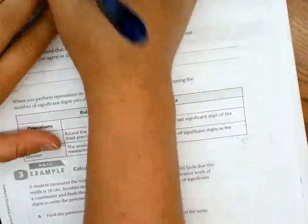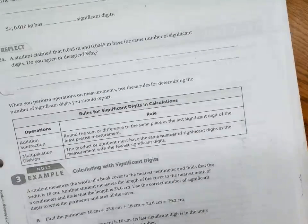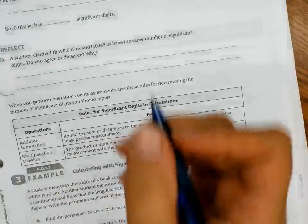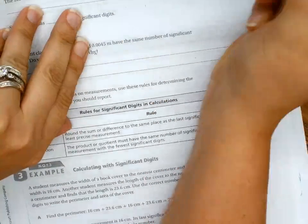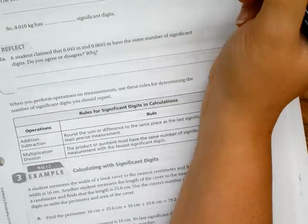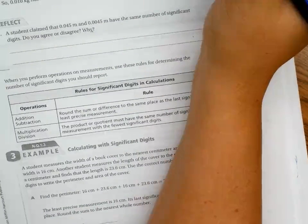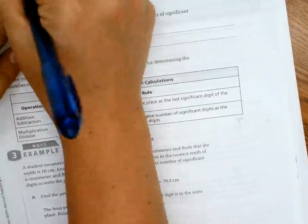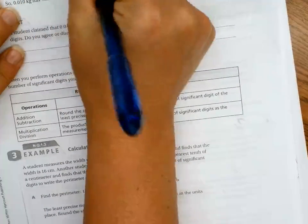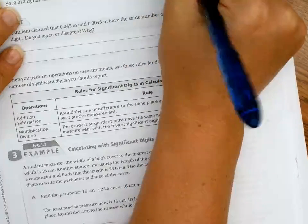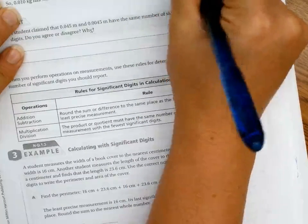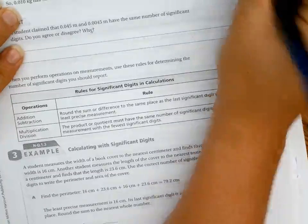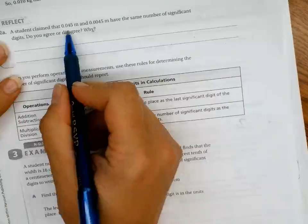All right, so our next number is 0.010, 0.010. So on this one, the digit one is a significant digit because it's a non-zero. Zero after the one is a significant digit because, why? It's after the last non-zero digit and to the right of a decimal point. So how many significant digits? Two.